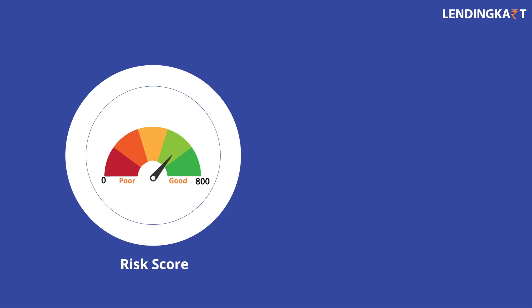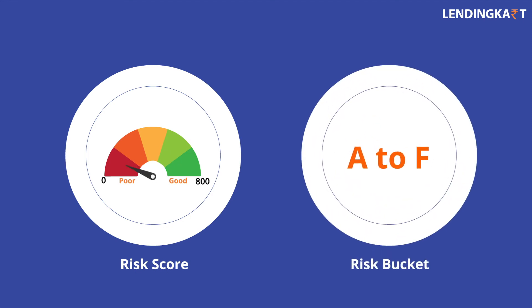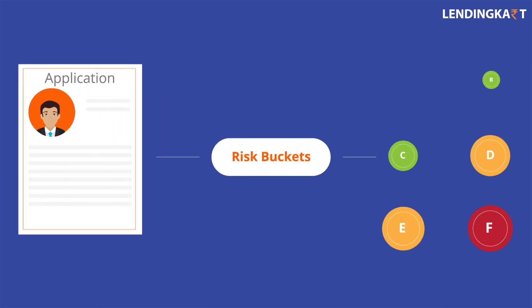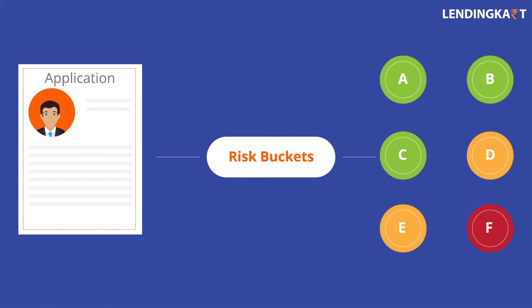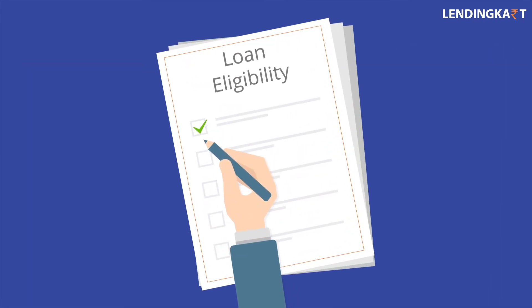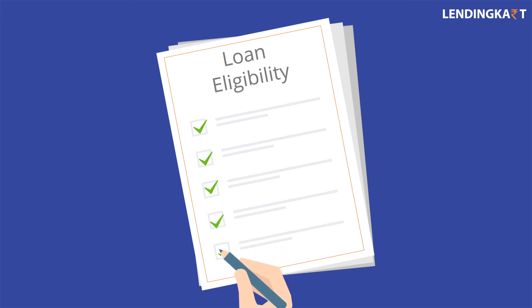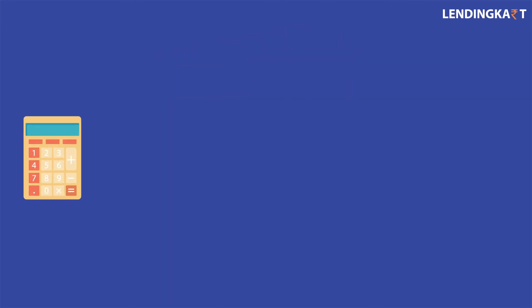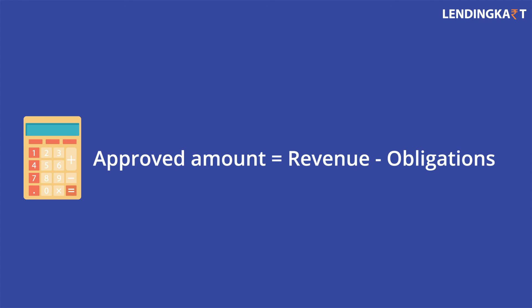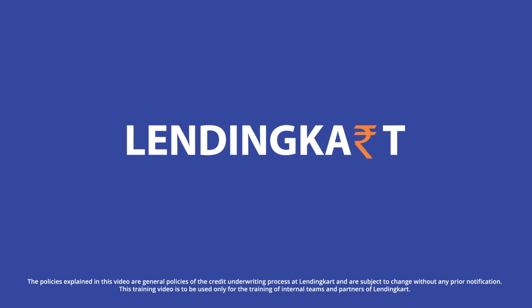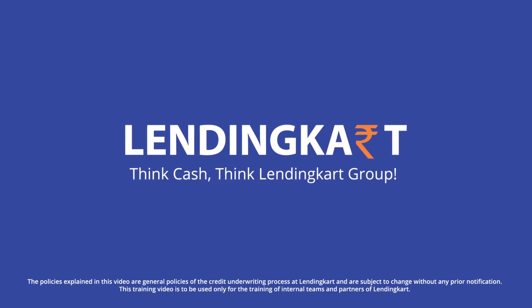Overall, we capture close to five thousand variables or data points for generating a risk score and risk bucket. Each application is categorized into different risk buckets. Final loan eligibility is a factor of the multiplier method based on risk grade — a function of net credits calculated from banking and existing leverage of the borrower. We hope you found this session beneficial. Thank you for watching.